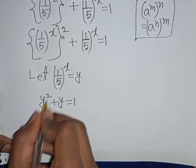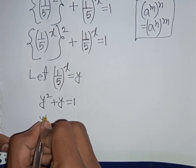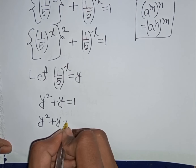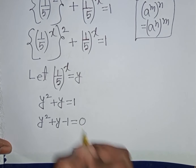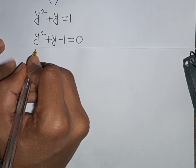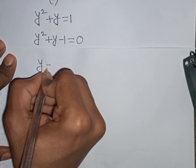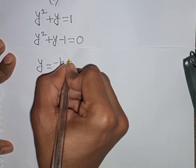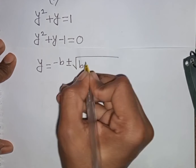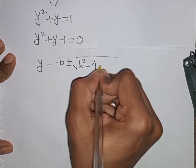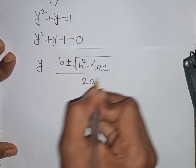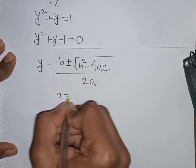Our equation becomes y squared plus y equals 1. Rearranging, y squared plus y minus 1 equals 0. Now we can apply the quadratic formula: y = (−b ± √(b²−4ac)) / 2a. Here a = 1.